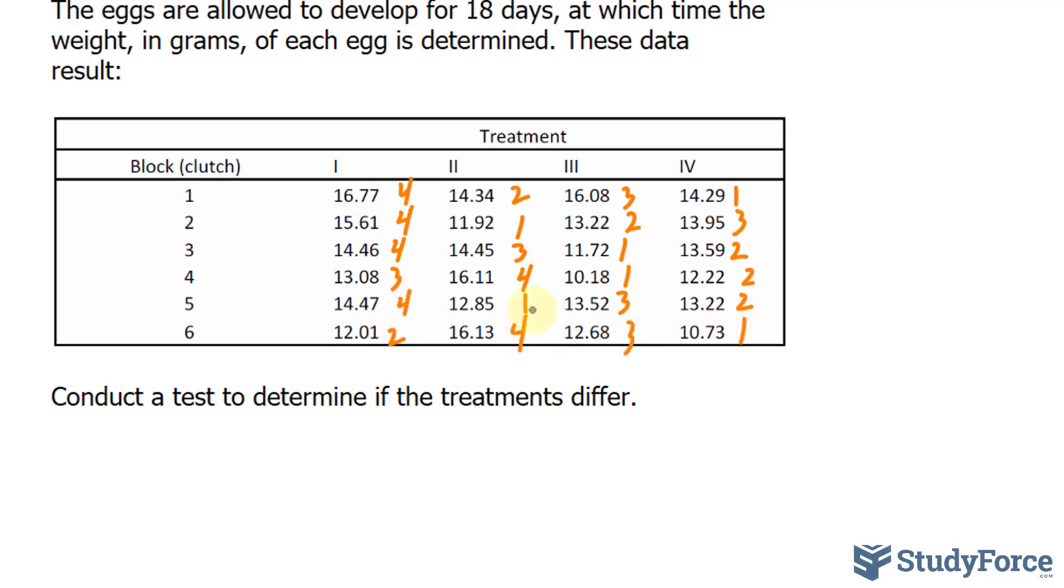Now that we've ranked each of these rows, we will add these up, the ranks, and write them down underneath. For this column, adding up 4 plus 4 plus 4 plus 3 plus 4 plus 2 is 21. Here is 15, 13, and finally 11. We will need these values later on when we calculate the test statistic.